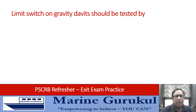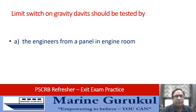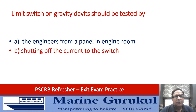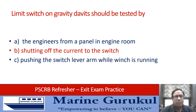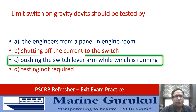The limit switch on a gravity davit should be tested by: the engineers from the panel in the engine room, shutting off the current to the switch, pushing the switch lever arm while the winch is running, or testing is not required. Answer is C — pushing the switch lever arm while the winch is running.